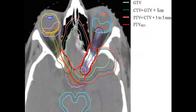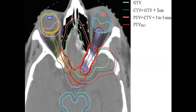This picture is taken from RTOG 0539 — you can see the lemon green is the GTV, CTB is around 1 cm, and PTV is 1.3 cm. You should include 1 cm around the GTV and give 0.3 to 0.5 cm for the PTV.